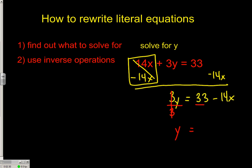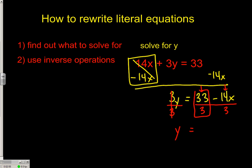The y is all by itself. Now we just have to divide the entire right side by 3. You can write it like that, and technically if you're not going to be doing much else with it, you can let it sit. But it also means that every single term on the right side is going to be divided by 3. So 33 divided by 3 and negative 14x divided by 3 — 33 divided by 3 is 11, and then just put minus 14/3 times x.